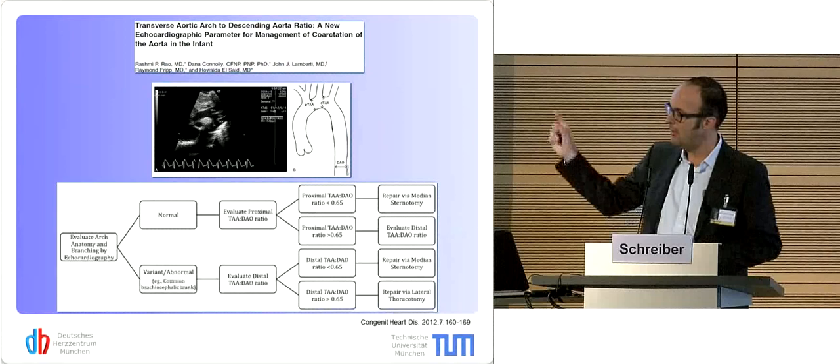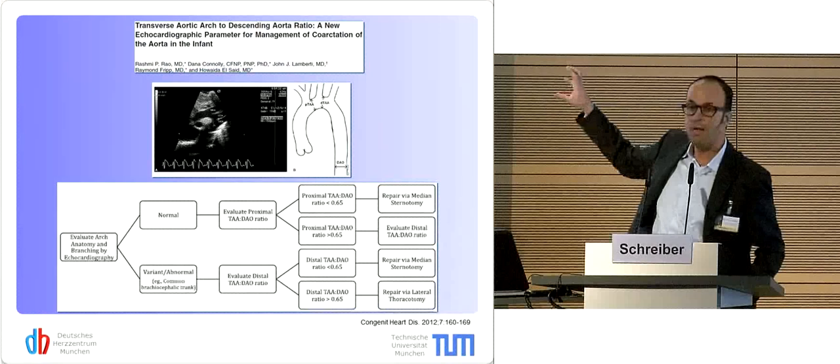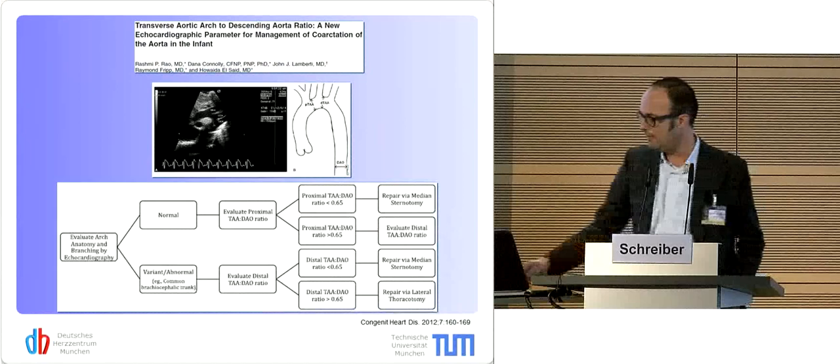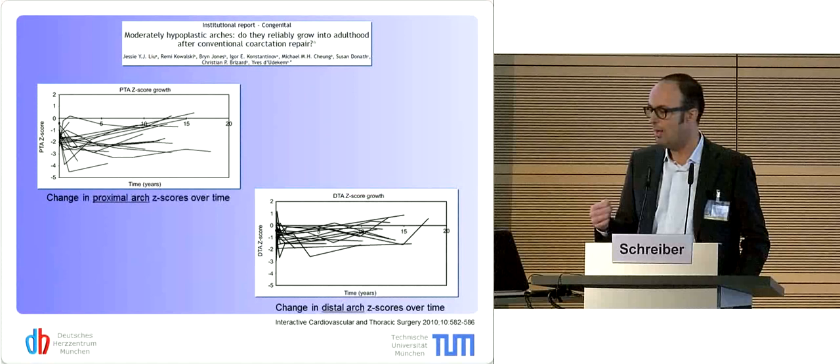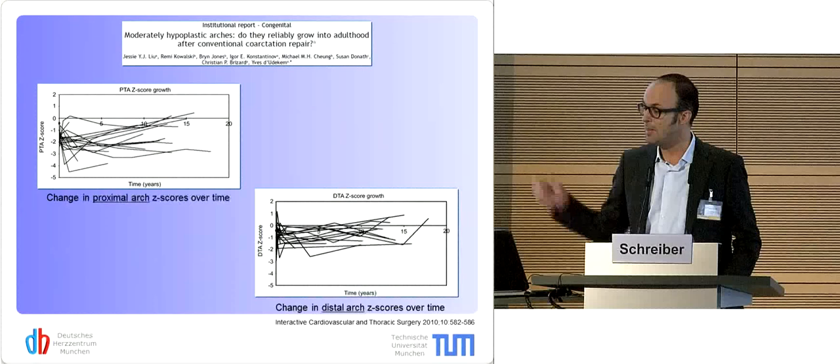This decision tree eventually led these cardiologists to embark on either a lateral or midline operation from the front. I still don't know whether this makes sense or not. But what we do know — and there are many publications — is that the proximal and distal arch do not seem to grow as much as we expect.